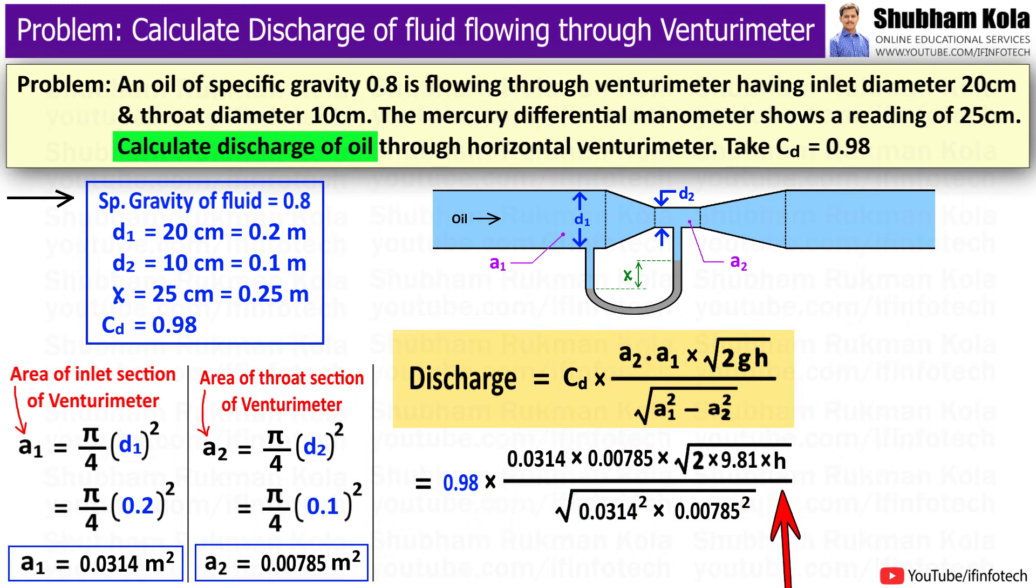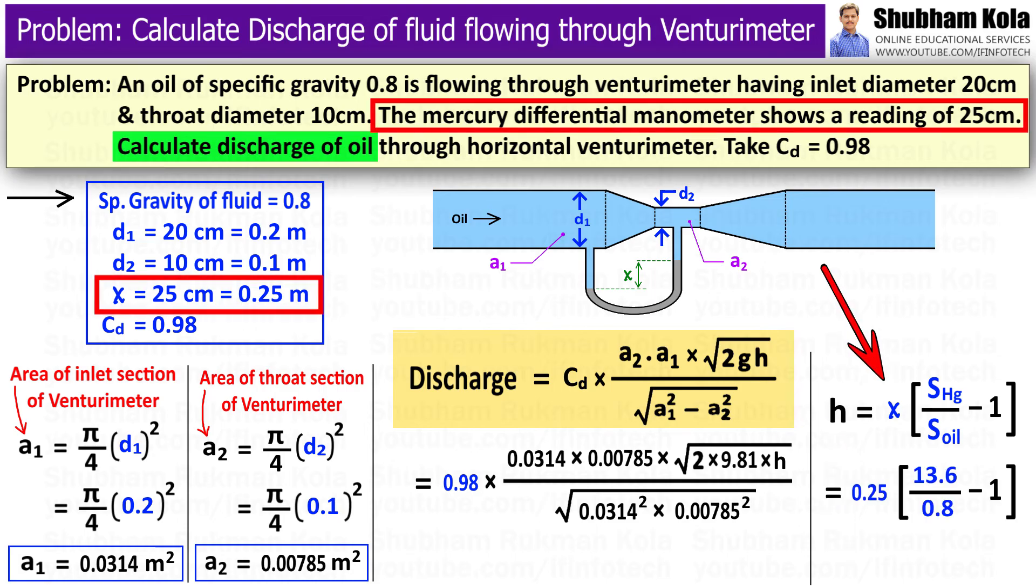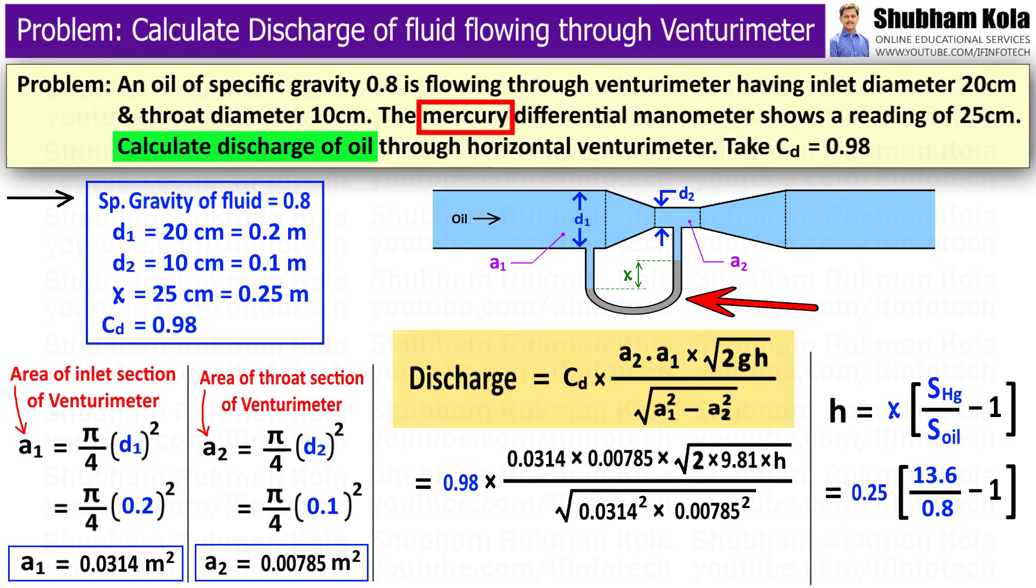We also have to calculate small h, which is the difference in pressure head at inlet and throat of Venturimeter. Small h can be calculated with the help of manometric reading, which is 0.25 m. Here, the heavier fluid is mercury.